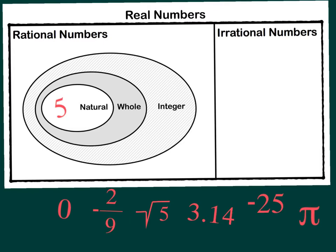Now by placing the 5 in the Venn diagram where I put it, that means that 5 is natural, it's whole, it's an integer, it's rational, and it's also real.